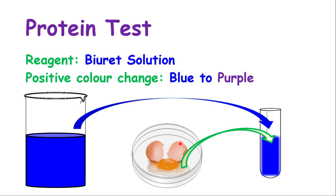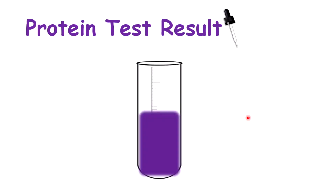The steps in doing the protein test: first, add the food to a test tube — you can put any food you want to test, cooked or uncooked. Then pour in a few milliliters of the Biuret solution and give it a shake for a couple of seconds. Put it to rest and allow it to sit undisturbed, then observe. If protein is present, you'll get a purple color as a positive test. If there is no change, you can conclude that the food does not contain any protein.